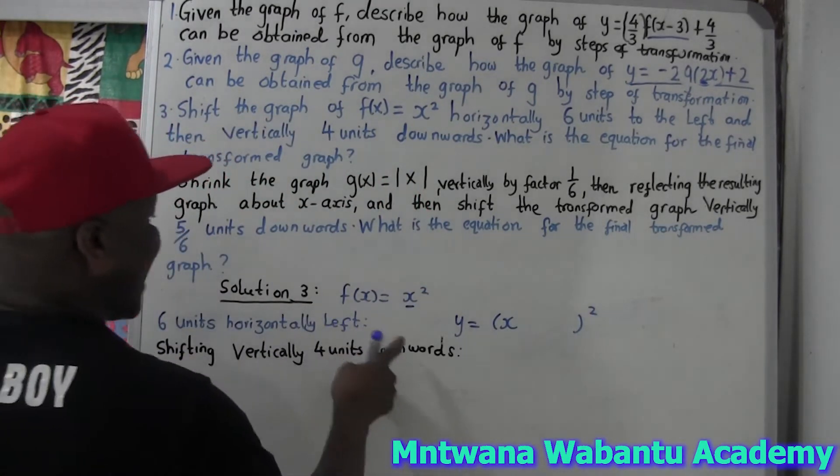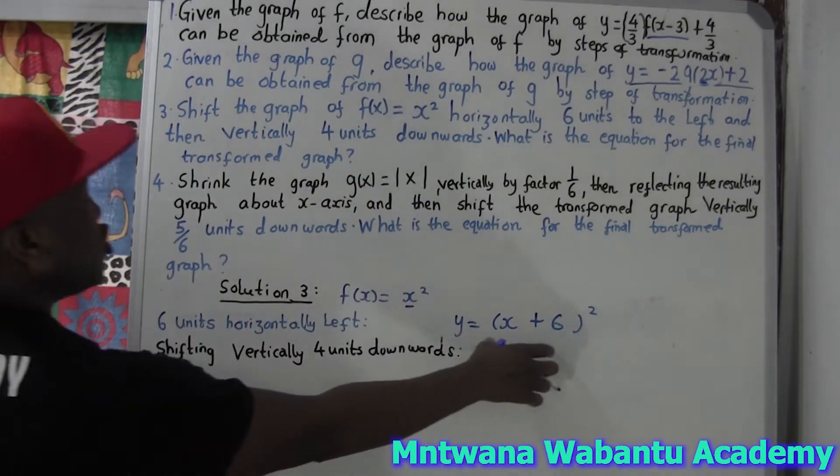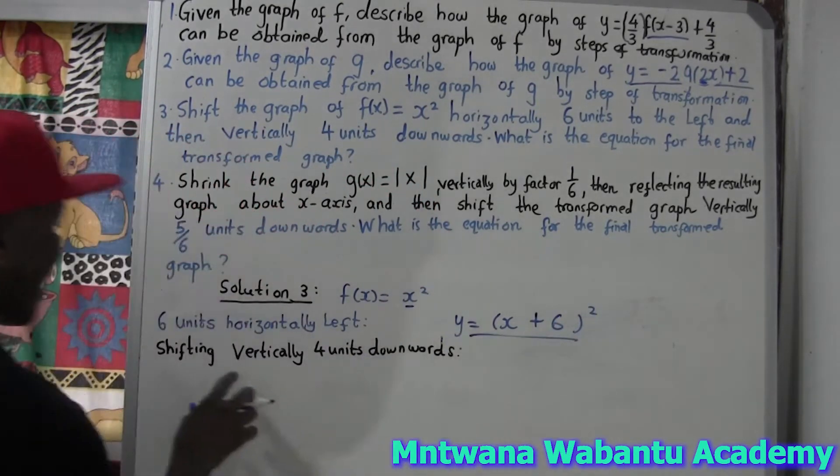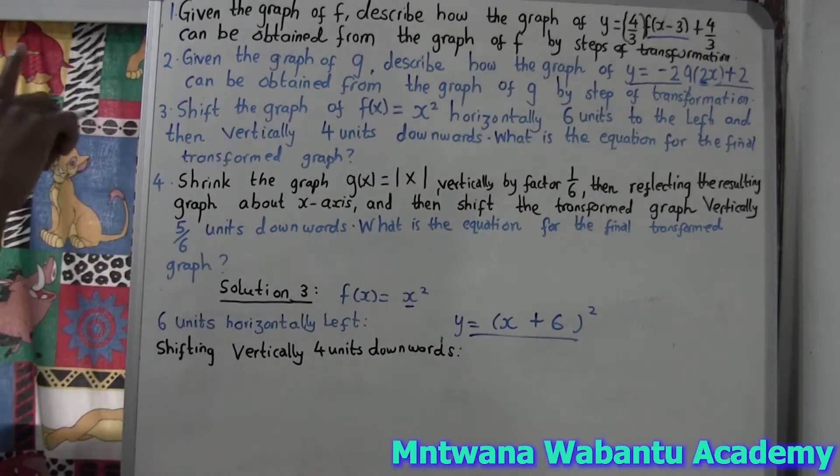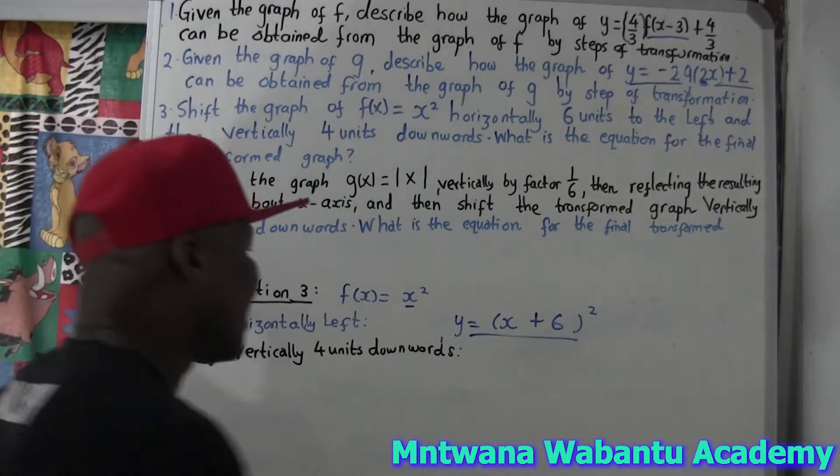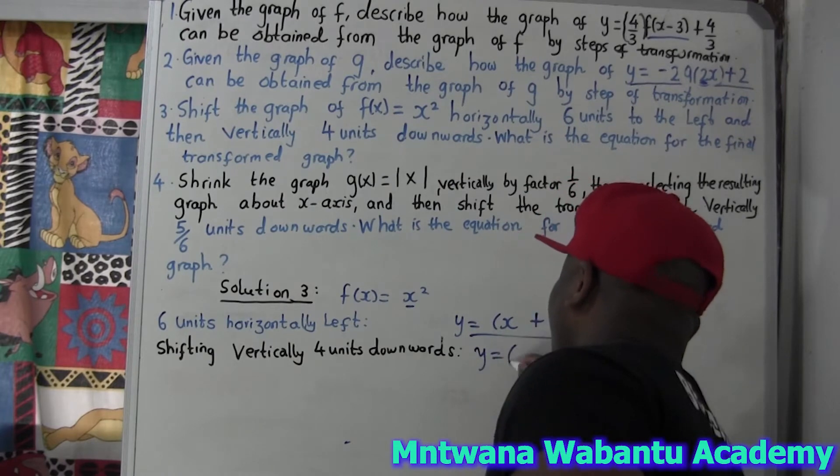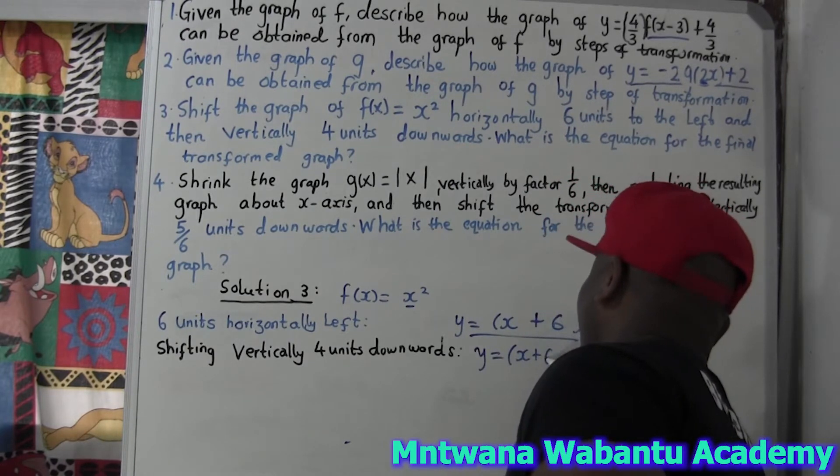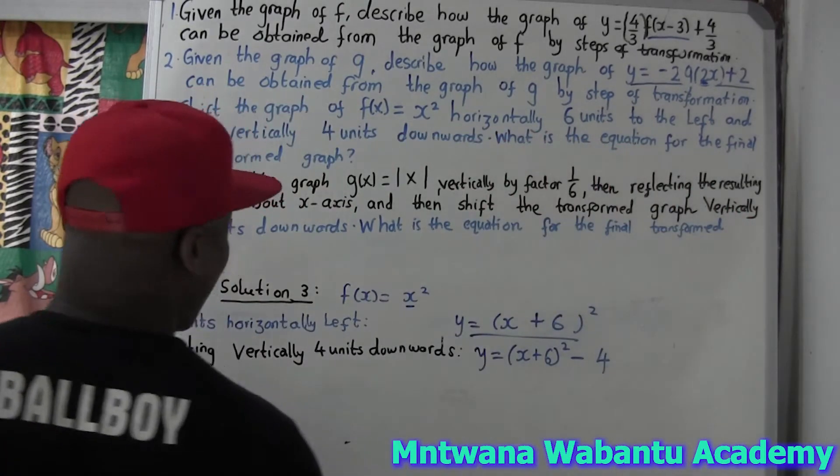So in here in x remember we have our plus, so what I'm gonna do, six unit to the left, to the left plus. So that's what I have. So now have a new graph. So this graph that I'm having now, what we have to do, shift vertical four unit downwards. But for downward or upward, if it's upward you plus, if you downward you minus. So four units downward it's gonna be y equal to x plus six squared minus four.